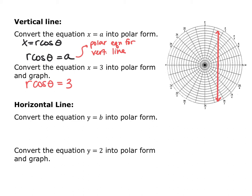Whenever we have r cosine theta equal to a number, that is a vertical line. Sometimes equations are easier in polar form — like r equals 4 for a circle, which is much simpler than the rectangular version. Other times, like x equals 3, it's easier in rectangular form than in polar form.